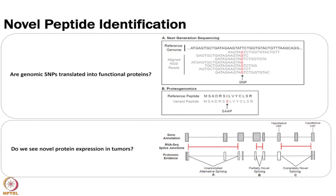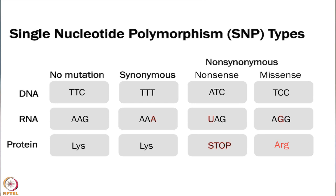Here we are looking at different RNA-seq splice junctions — things we talked about yesterday — and we will discuss all of the different novel combinations of splice junctions and how we deal with them in terms of proteomics. There are a couple different kinds of SNPs. If we have no mutation, we get a lysine. If we have a synonymous SNP — a G to A — it does not actually change the amino acid. We can have non-synonymous SNPs where it turns into a stop codon, stopping protein synthesis early, or a missense mutation where we get a complete change in the amino acid.